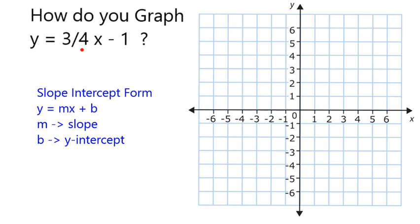This equation is already in slope-intercept form, so I can graph it by just looking at its various parts. What's the m up here is what we would call slope. So in this case, our slope is 3 over 4.